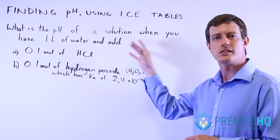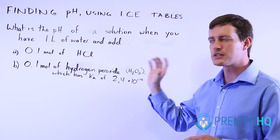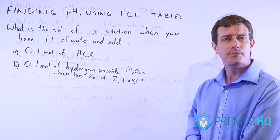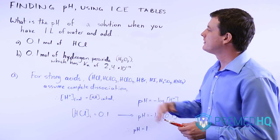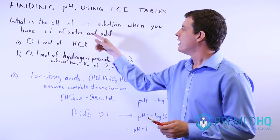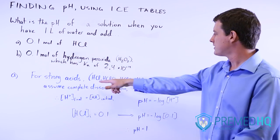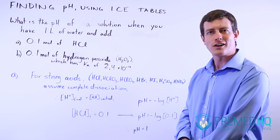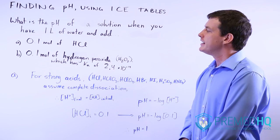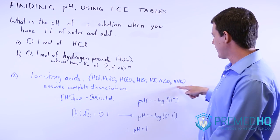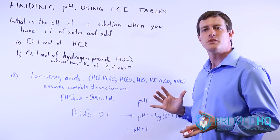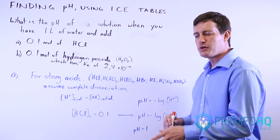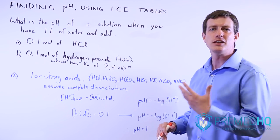One method involves solving for strong acids, which is fairly straightforward, and one involves using an ICE table to solve for weak acids, which is still very doable. For the strong acid case, HCl is one of those strong acids to be aware of for the MCAT, and if it's a strong acid you can just assume it completely dissociates, because that's the definition of a strong acid in general chemistry.